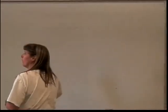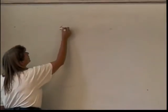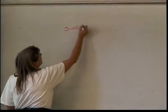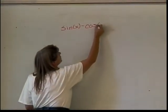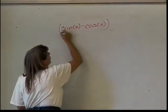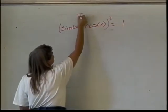Well, let's try, how about that one: sine of x minus cosine of x, sine of x minus cosine of x, squared, equals 1. Is this true or false?